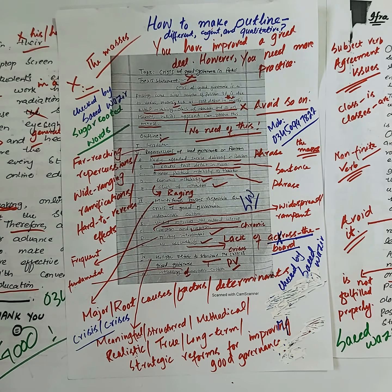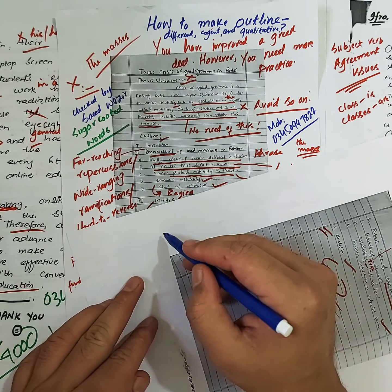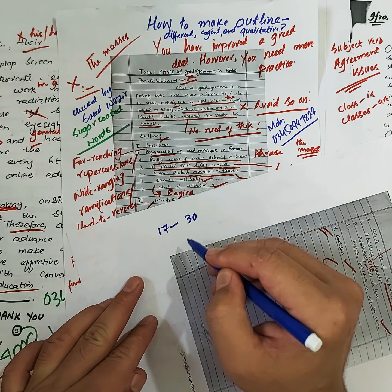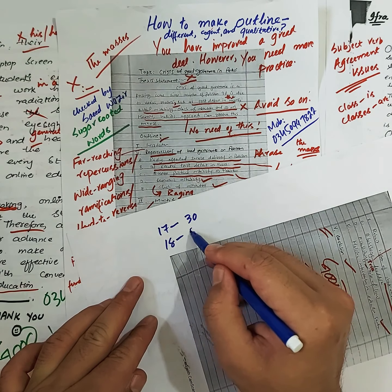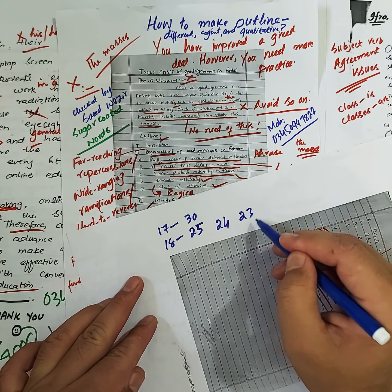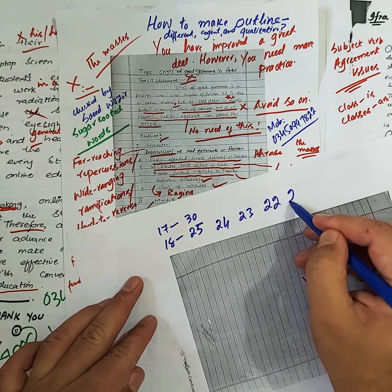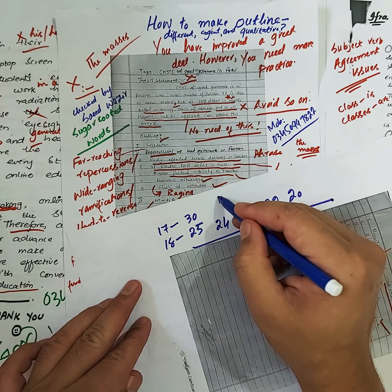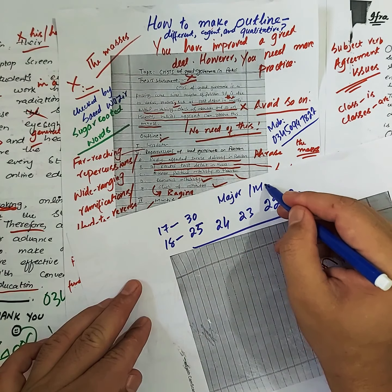Again, students, I'm going to recap the whole discussion. Try to understand this categorically. In the outline, whether you are giving 17 to 30 headings, 18 to 25, or even 20 to 24 headings — the key point is to build a well-structured outline.